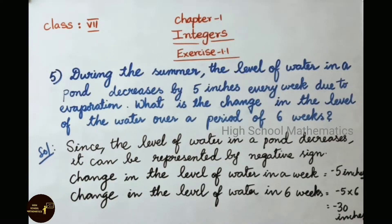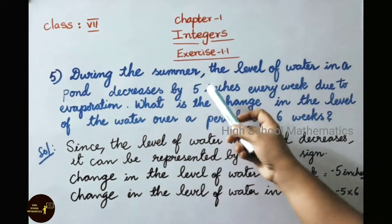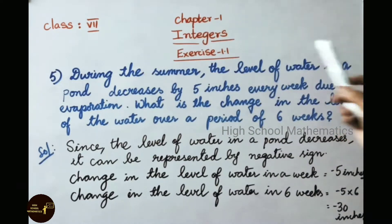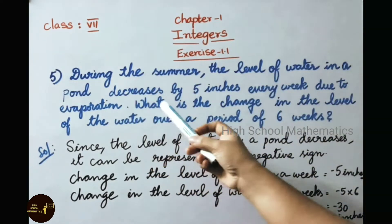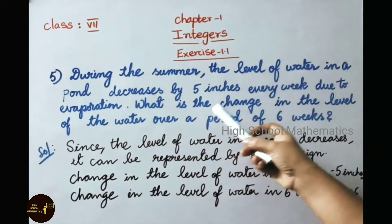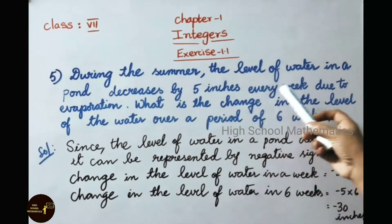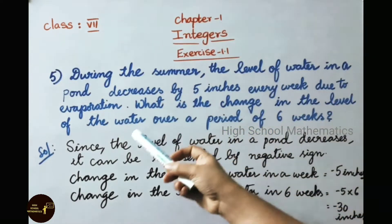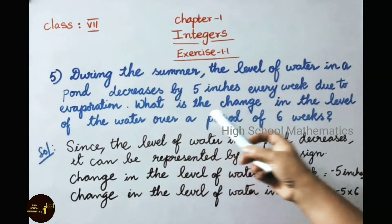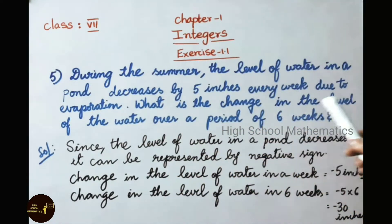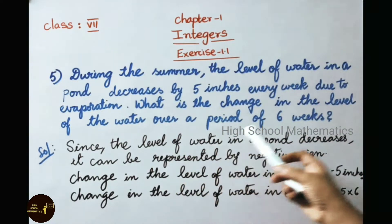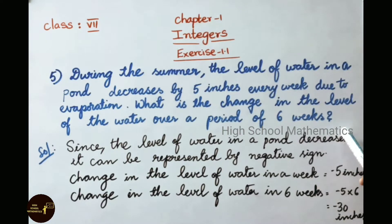Now let us see the fifth sum. During the summer, the level of water in a pond decreases by 5 inches every week due to evaporation. What is the change in the level of the water over a period of 6 weeks?